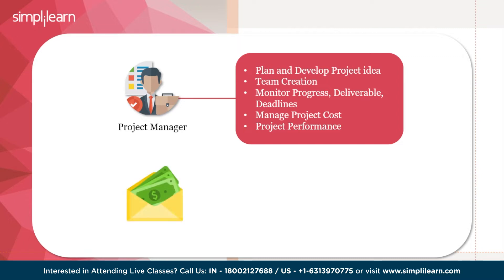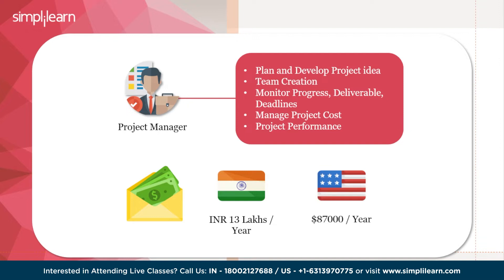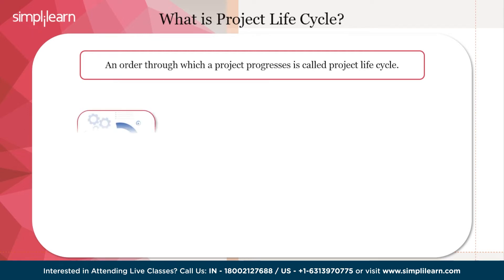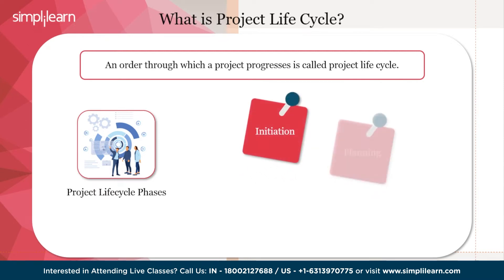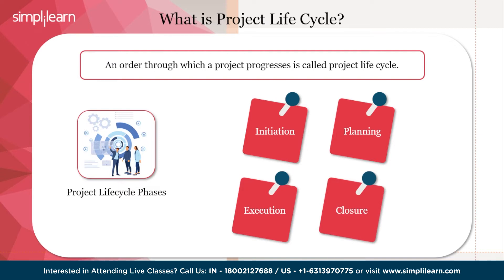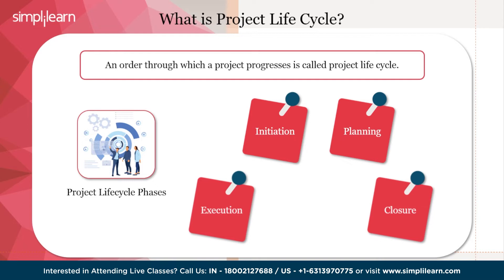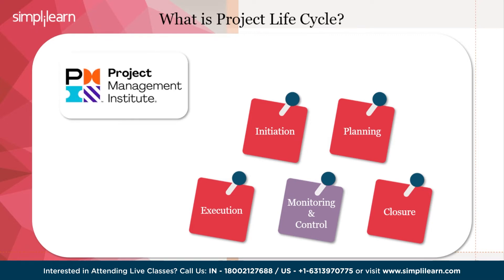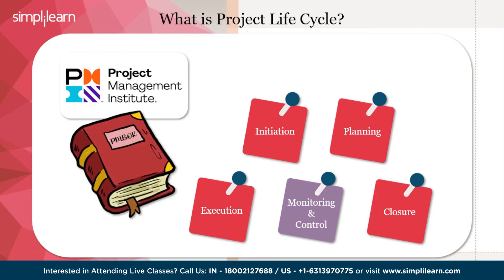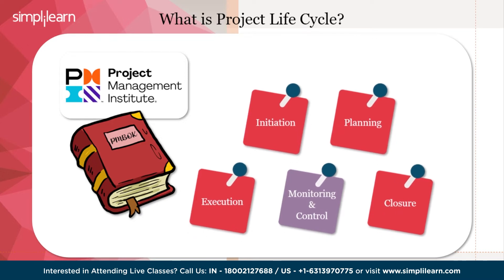Thus, in any domain, for any project, there is a requirement of a project manager. A project manager earns on average 13 lakhs annually in India; however, in the U.S., the average salary is reported as $87,000 per year. The project lifecycle involves four important phases: initiation, planning, execution, and closure. Some project managers also include an additional phase called monitoring and control. All phases are part of the Project Management Institute's PMBOK, and are commonly associated with project management certification. The current PMBOK version 7 is necessary to complete PMP certification.